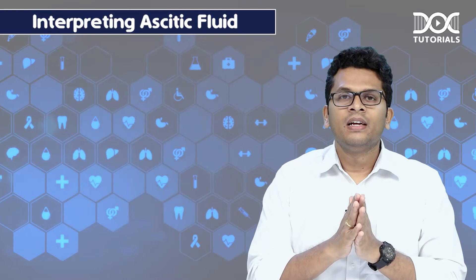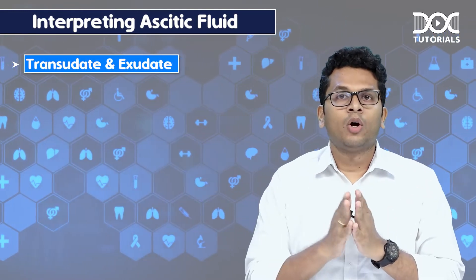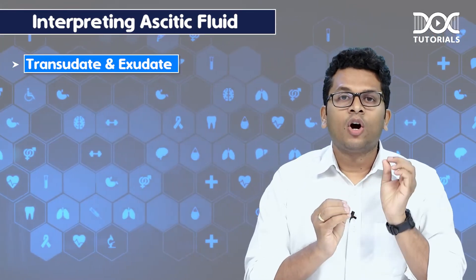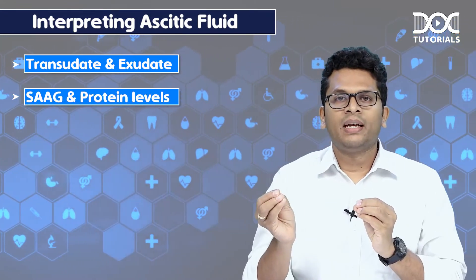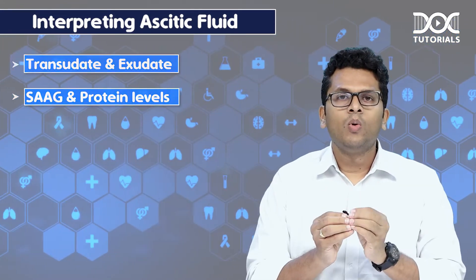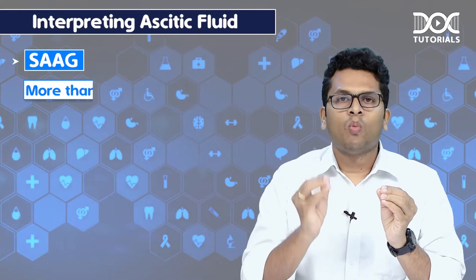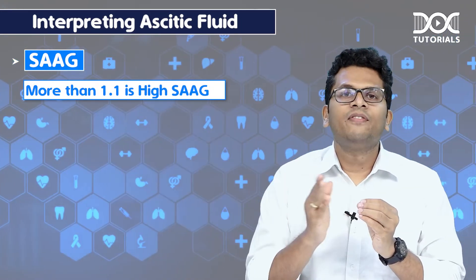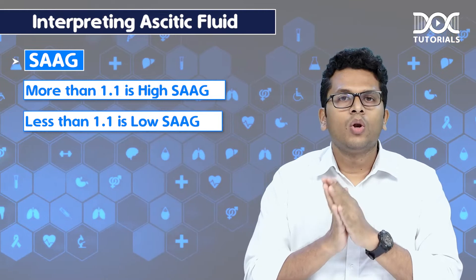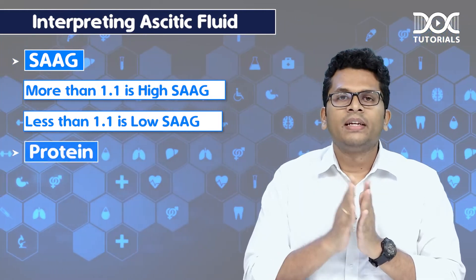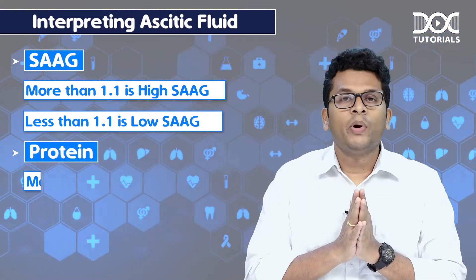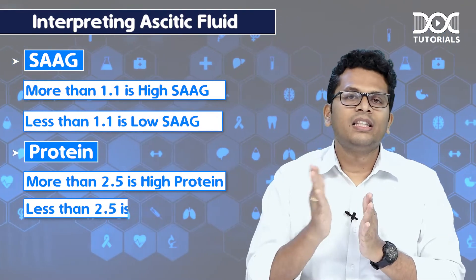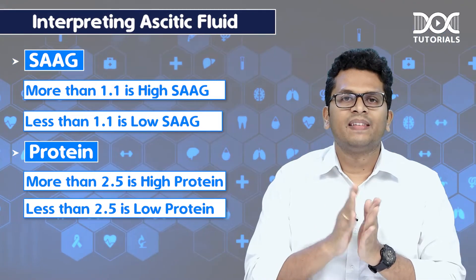Initially, the transudate and exudate concept was being used, but of late, the concept of SAAG and protein levels are being used. SAAG more than 1.1 is called high SAAG and less than 1.1 is called low SAAG. Protein more than 2.5 is considered high and less than 2.5 is considered low.